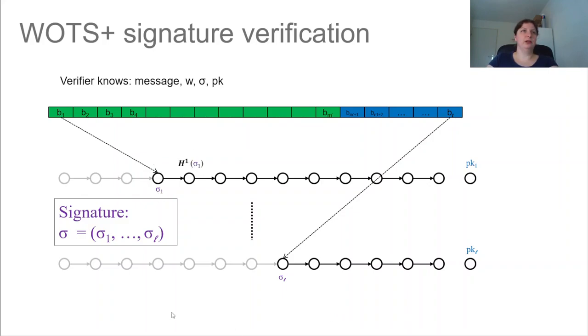And then they can just start applying the hash function. So for S1, they can apply H again and again. And they apply W minus one minus the value of B1 times. Because applying the hash function this many times is supposed to lead to the public key one. And this can again be repeated for all chunks. So also for sigma L, you go all the way to the end. And then you verify against the public key.